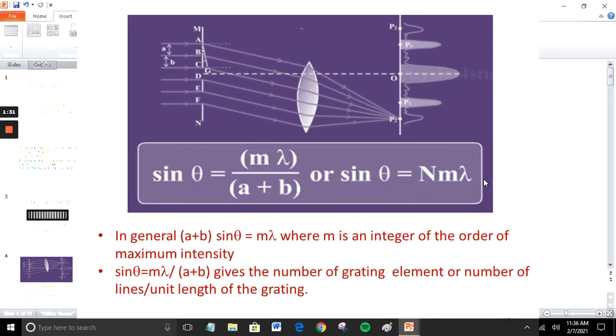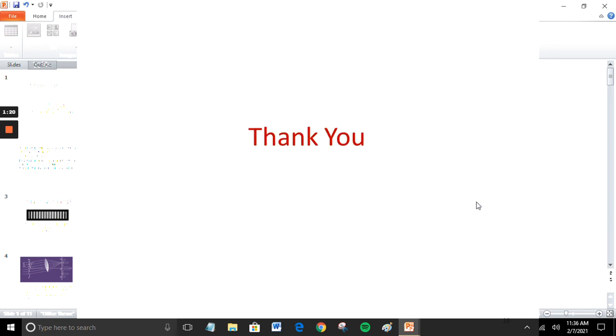Sin theta equals M lambda divided by (A + B) gives the number of grating elements or number of lines per unit length of the grating. Thank you.